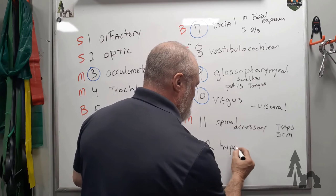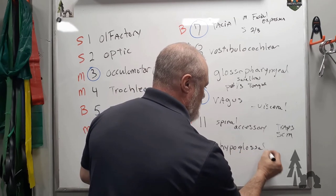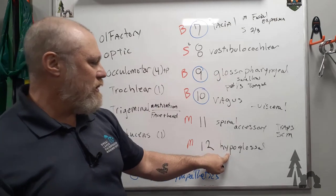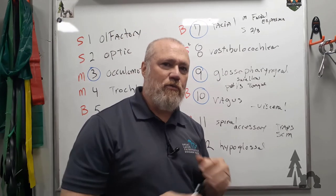And twelve is the hypoglossal—glossal again being tongue, like glossopharyngeal, under the tongue, hypoglossal. These are the muscles that are going to move your tongue around.